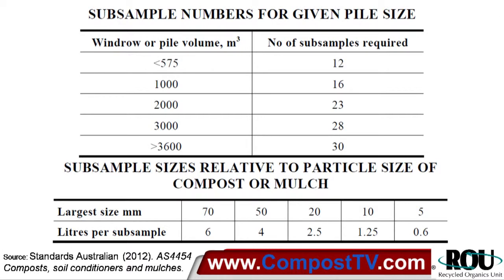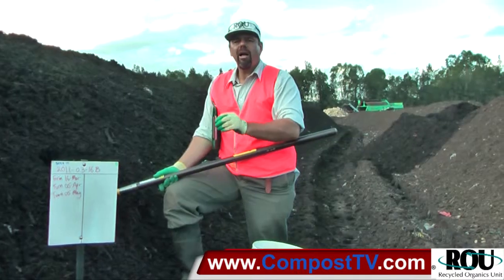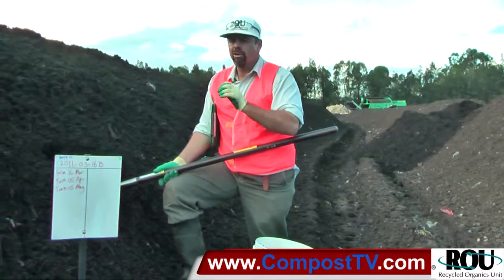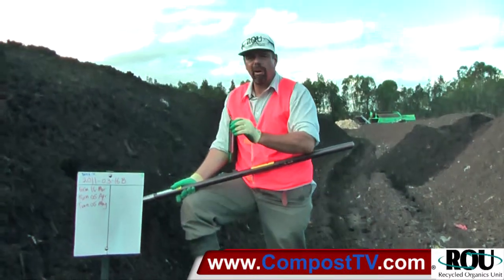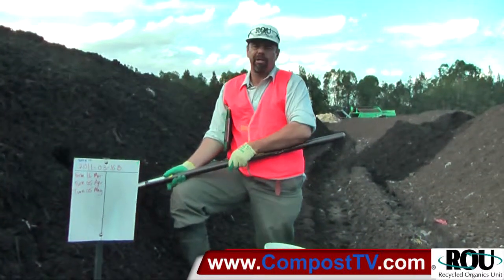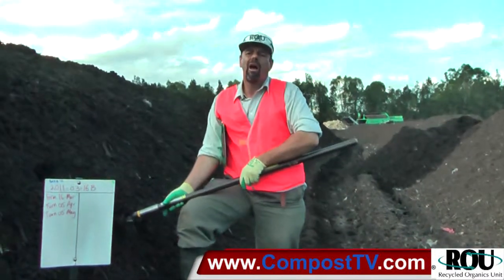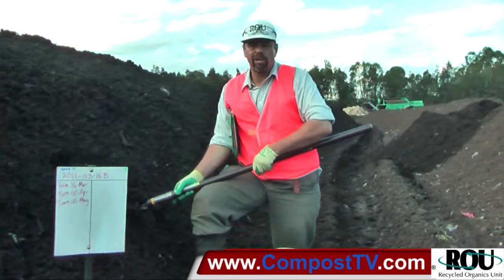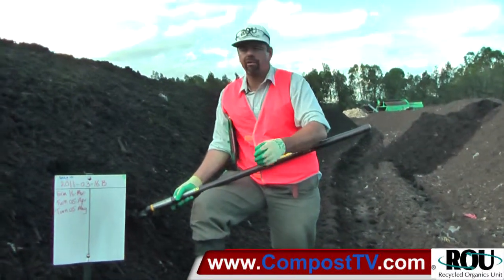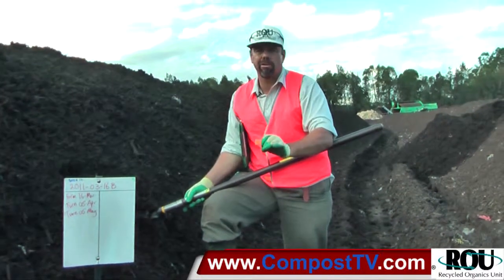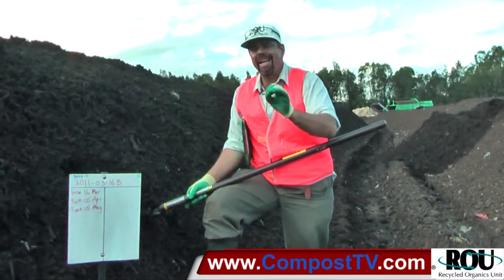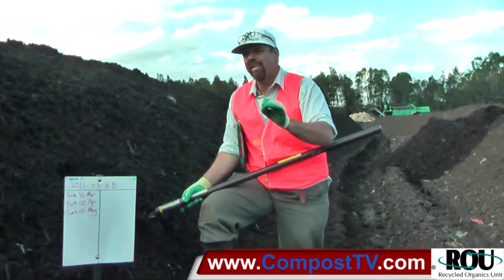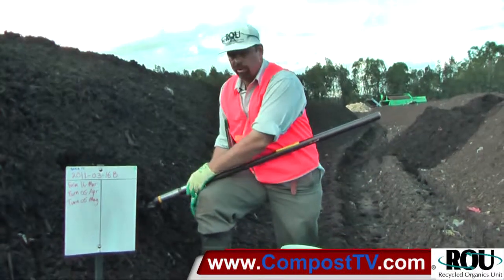You'll also see that there's a minimum sample size that relates to the size of particles in the compost pile. If the particles are larger, the larger the sample you need to get, because you don't want to miss the larger particles by taking too small an incremental sample from each point. You're trying to get a representative mix of what's in the pile — that's what you want to have tested.